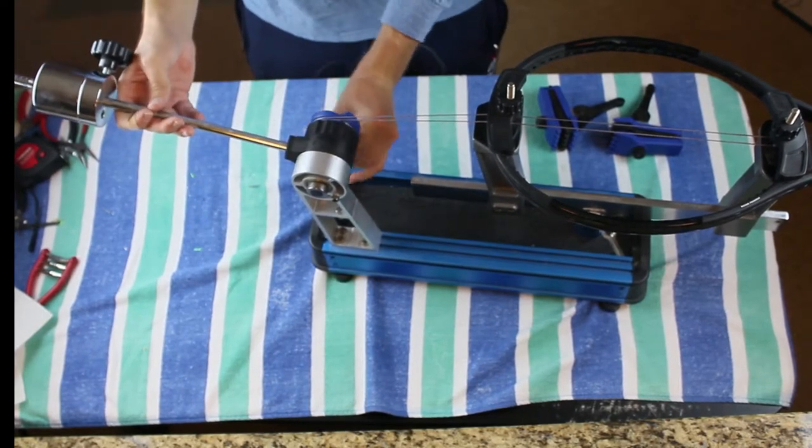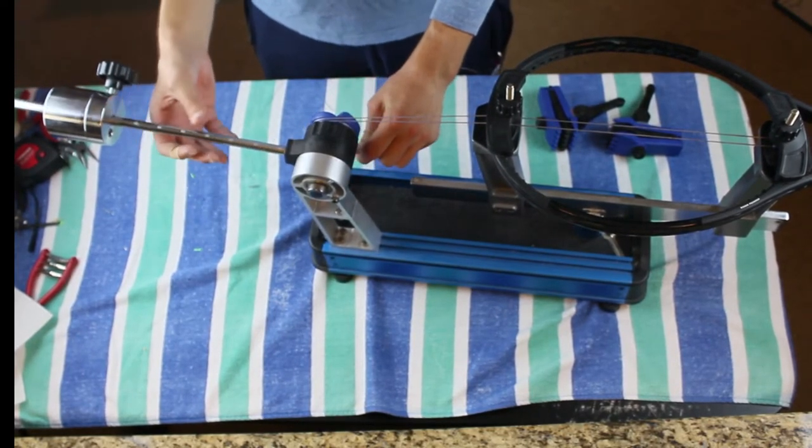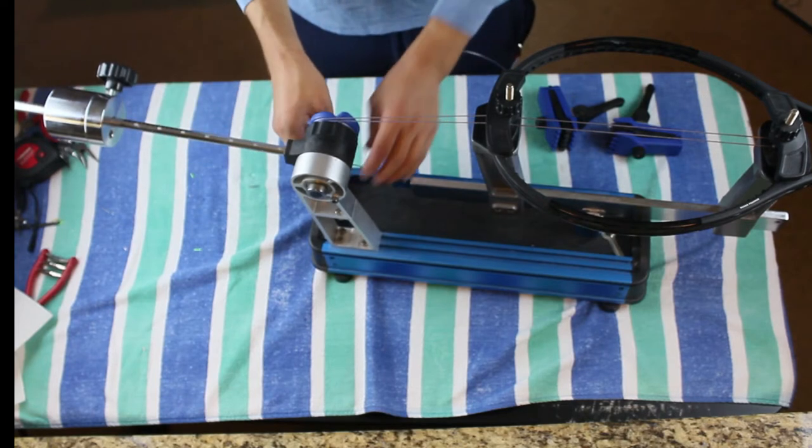Feed the string, in this case it's going to be from the throat to the head of the racket, and we're going to make sure the string length is even on each side so it's symmetrical.